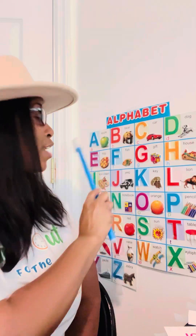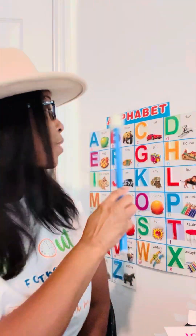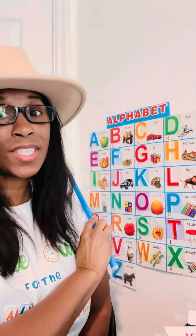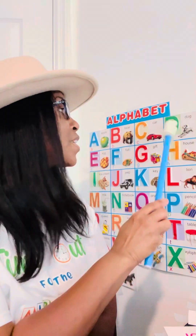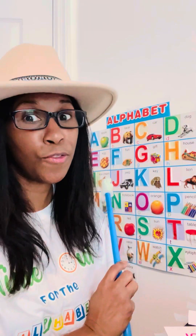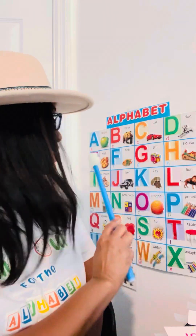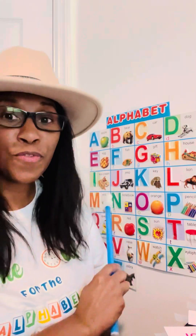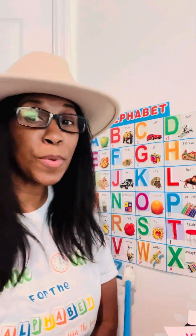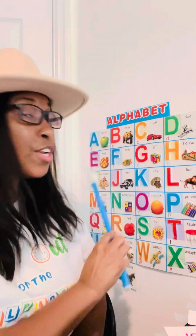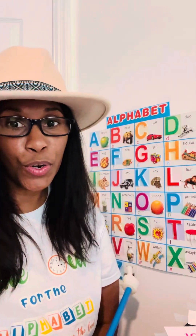A is always the first letter. Z is always the last letter. B is always the second. C is always the third. D is always the fourth, and so on. E is fifth. So we keep on going until we get to number 26. They're all in a row. They're all in order.